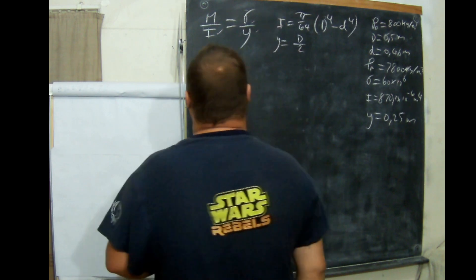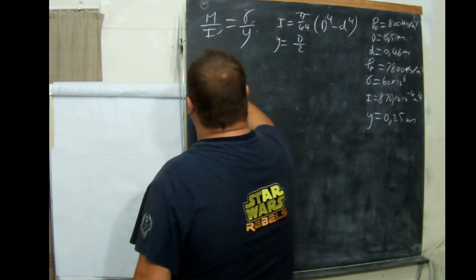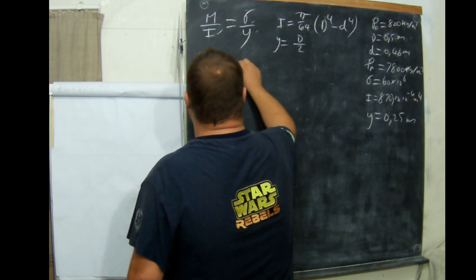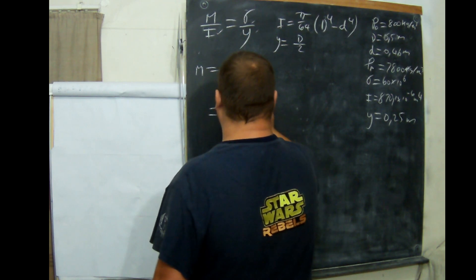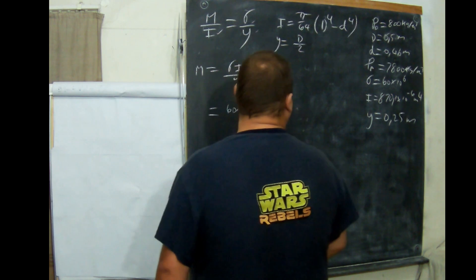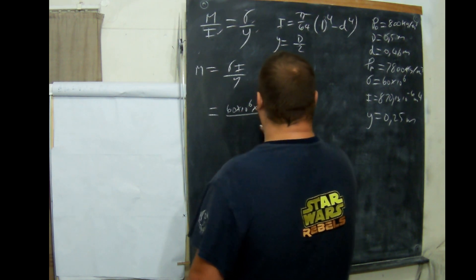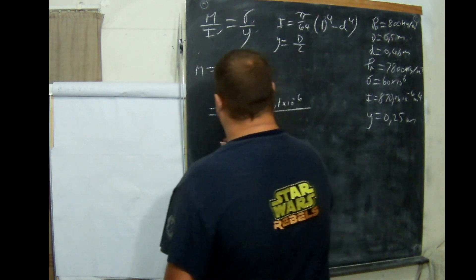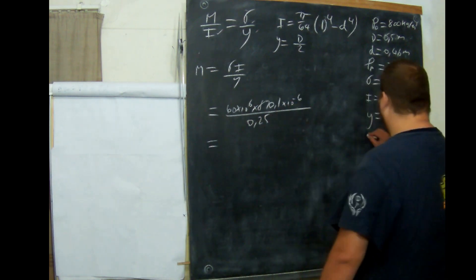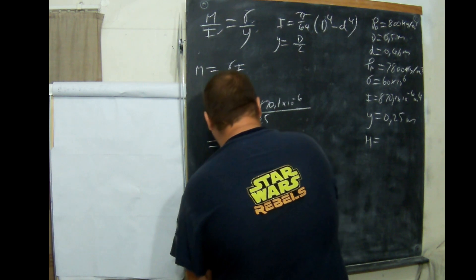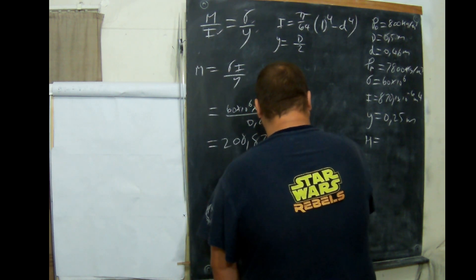We have I, we have sigma, and we have Y. All we have to do is rearrange — move I across so that M equals sigma times I over Y. Which equals 60 times 10 to the 6, times 870,1 times 10 to the minus 6, all over 0,25. M is equal to 208,824 kilonewton meters.